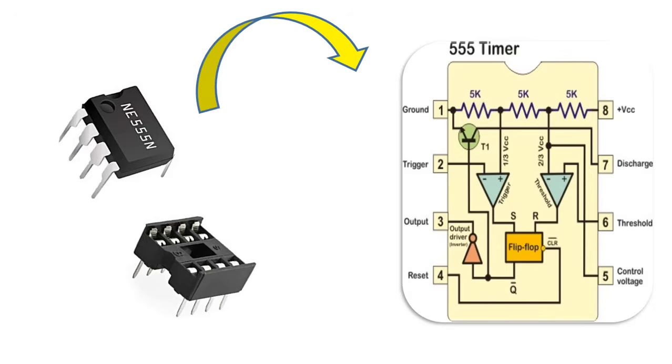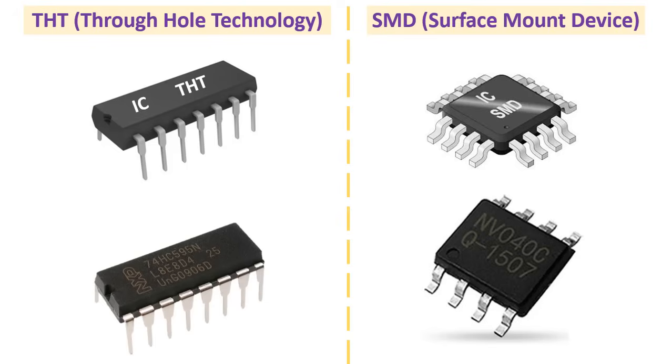Like transistors, you can learn all about integrated circuits by looking up their datasheets. On the datasheet, you will learn the functionality of each pin. It should also state the voltage and current ratings of both the chip itself and each individual pin.